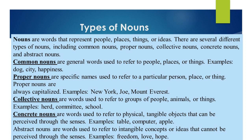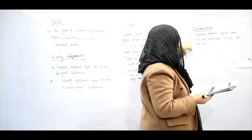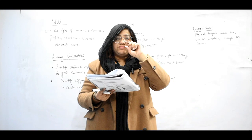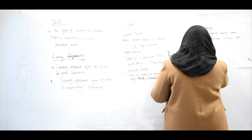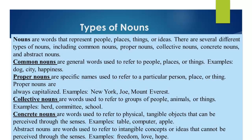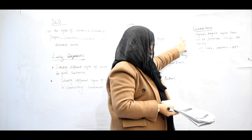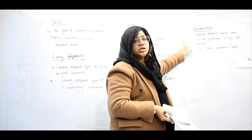Concrete nouns are words used to refer to physical, tangible objects that can be perceived through the senses. Concrete nouns are physical objects that we can see and experience through our senses. For example: table, computer, chair, and apple. These physical tangible objects that we can easily perceive through our senses are called concrete nouns.